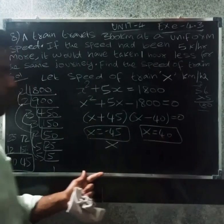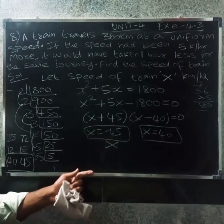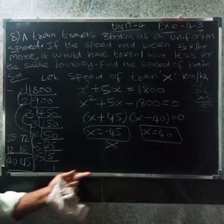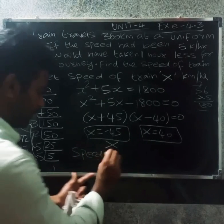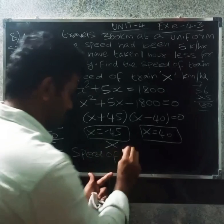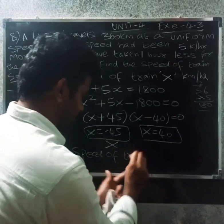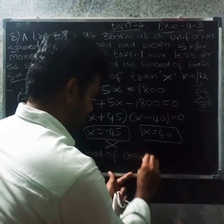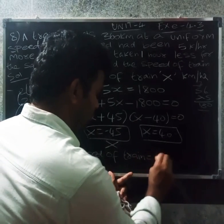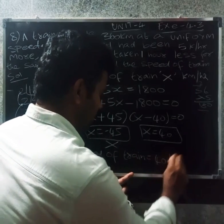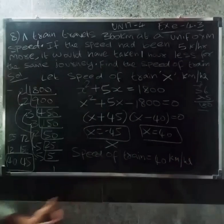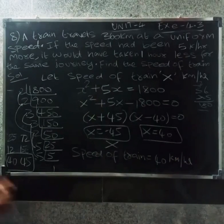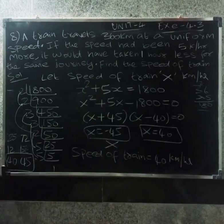The speed of the train equals 40 kilometers per hour. Thank you.